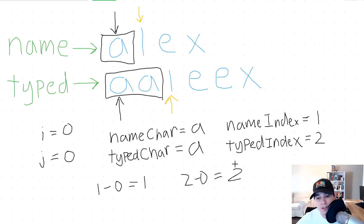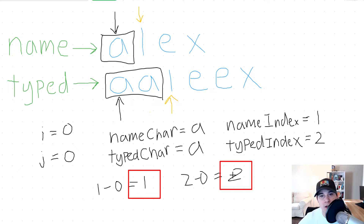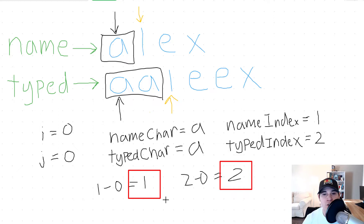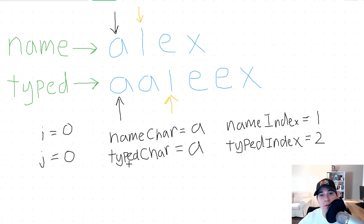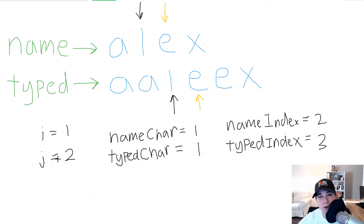We use these calculated values to determine if the character was long pressed. If it was not long pressed and we don't have enough characters, we return false. Since two is greater than one, we are okay and can continue iterating. We repeat this process until we reach the end of our name string. The last step is to set I equal to name index and J equal to typed index, so our I and J pointers move to where name and typed index were.